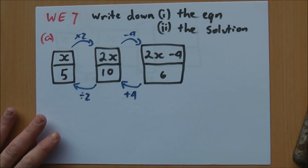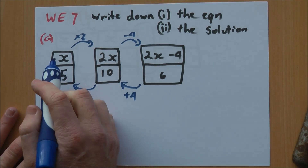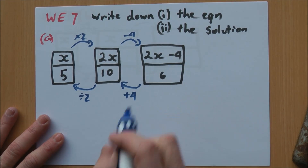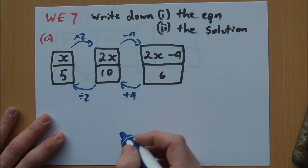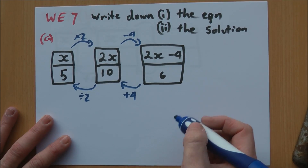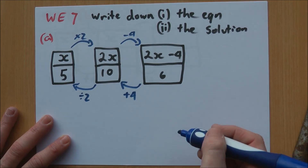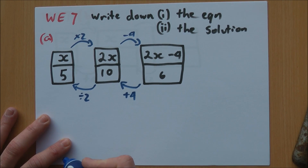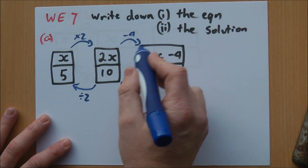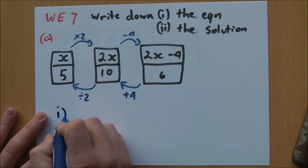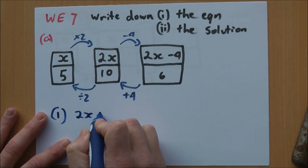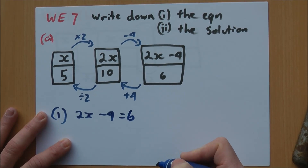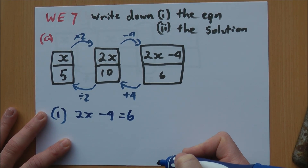In part A, we know that when we start with x, we times it by 2 to get 2x, then we subtract 4 to get 2x minus 4. The idea of the two levels of boxes is that this bit equals what's underneath. So in part 1, we need to write down our equation: 2x minus 4 equals 6. That is our equation.